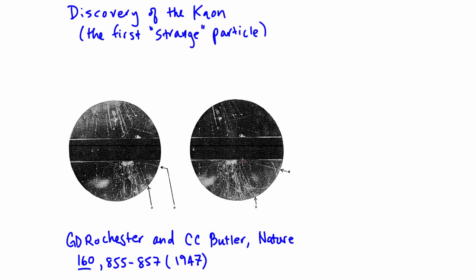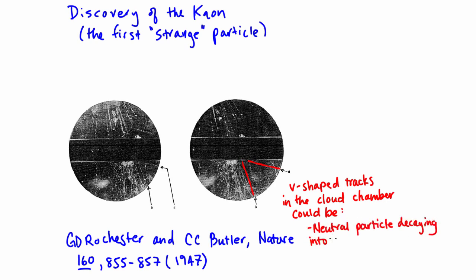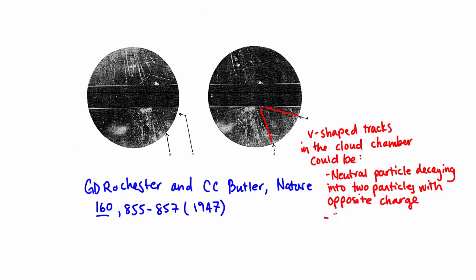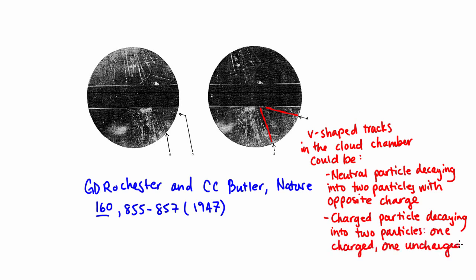Kaons and other strange particles were known as V particles, because they produced a characteristic V-shaped decay track within a cloud chamber, like the one shown in this cloud chamber picture here. These V shapes were consistent with two possibilities: either they were neutral particles decaying into two particles with opposite charge, or they were charged particles decaying into two particles, one charged and one uncharged. Basically, these V shapes looked like they were characteristic of a decay process.